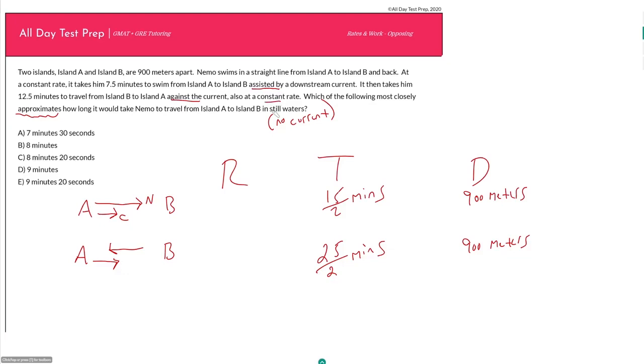We want to know how long would it take Nemo without any sort of assistance from the current to go the 900 meters. It looks like we've pretty much have this entire thing filled out. We can figure out our rates from the distance and the time that we filled in. The question is, what rate is this and what rate are we looking for?